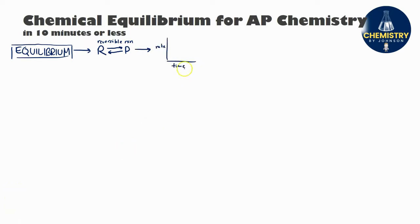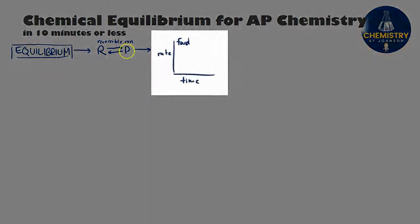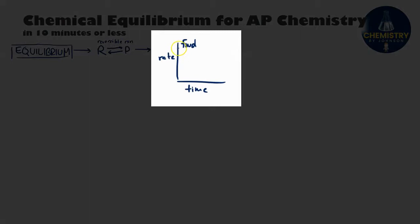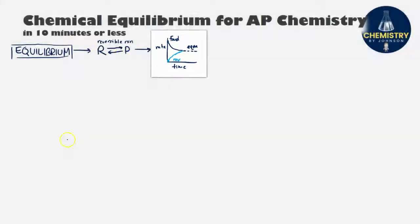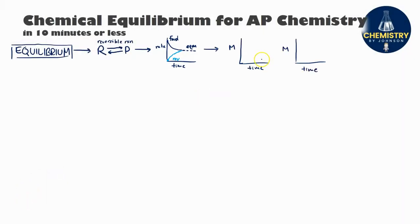We can see that expressed graphically on a rate versus time graph. If your reaction starts out with lots of reactants and essentially no products, then at the beginning the forward reaction rate is going to be relatively fast. As time goes on, the rate of the forward reaction gets slower and slower, while the reverse reaction starts relatively slow but increases in speed, until the two rates meet. When the rate of the forward reaction equals the rate of the reverse reaction, you have reached equilibrium, and the amounts of reactants and products will no longer change.